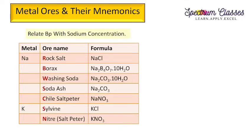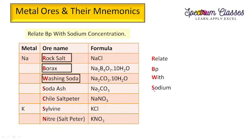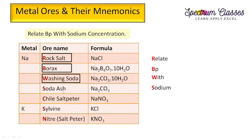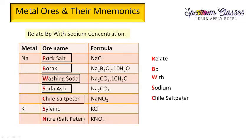The mnemonic I have made uses first letters from a sentence to give ideas about ore names. The sentence relates to sodium: R is for rock salt, B is for borax, W is for washing soda, then sodium for soda ash. So: relate rock salt, before borax, washing soda, soda ash, and then chili saltpeter wheat.